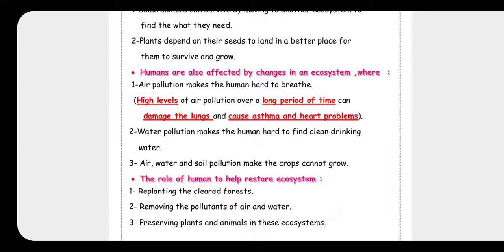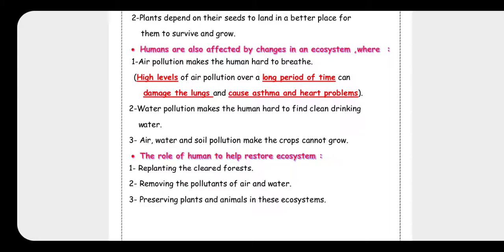Humans are also affected by changes in the ecosystem. Air pollution makes it hard to breathe, and high levels of air pollution over a long period of time can damage the lungs and cause heart problems. Water pollution makes it harder to find clean drinking water for drinking and cooking. Air, water, and soil pollution also make crops unable to grow.